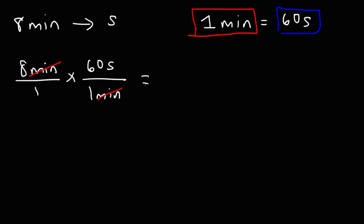So it's going to be 8 times 60. 8 times 6 is 48, so if you add the 0, this will be 480. And that is the answer. So 8 minutes is equal to 480 seconds.